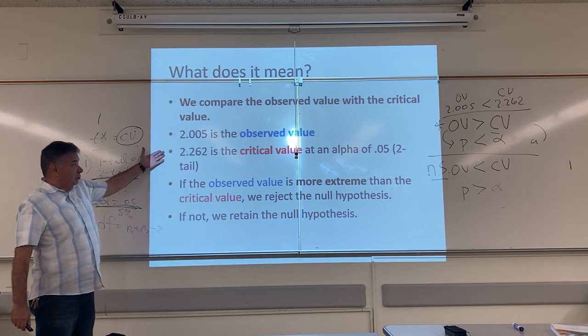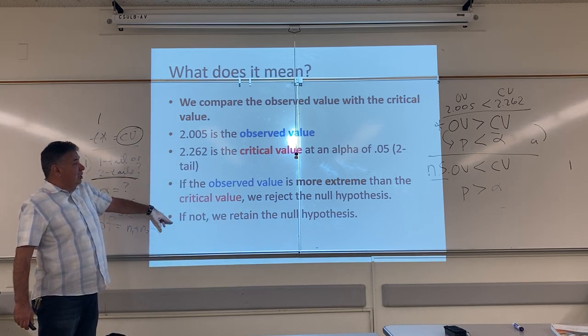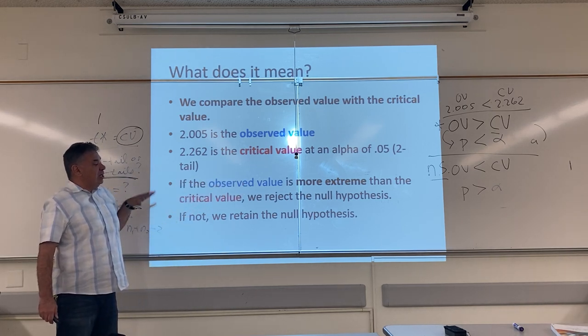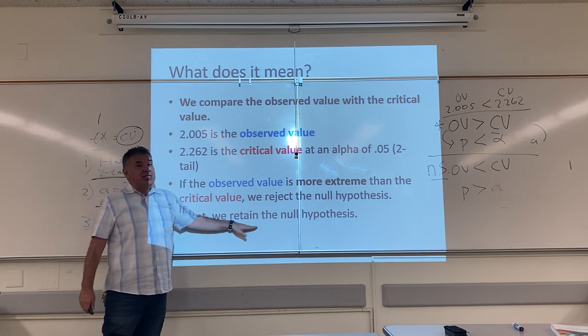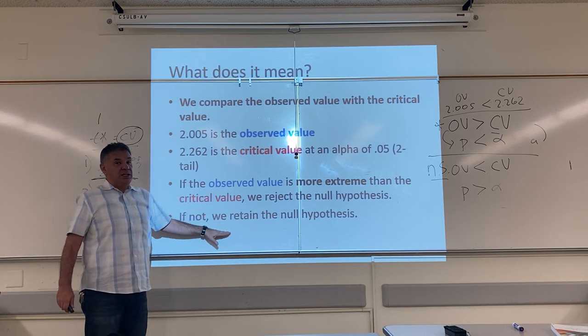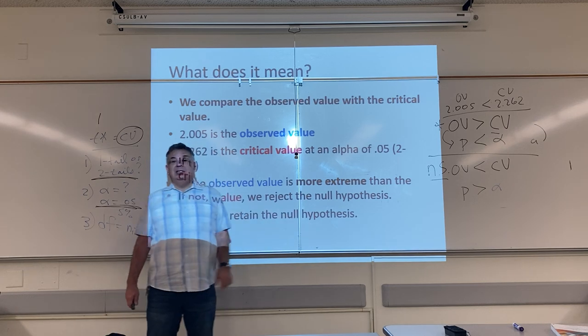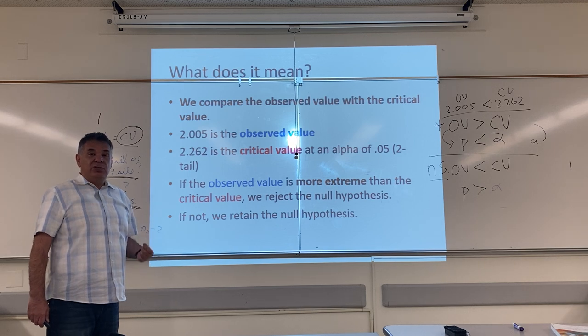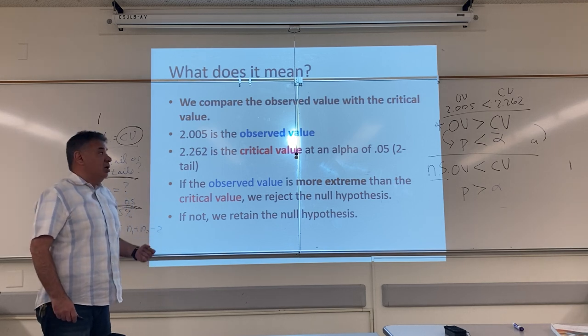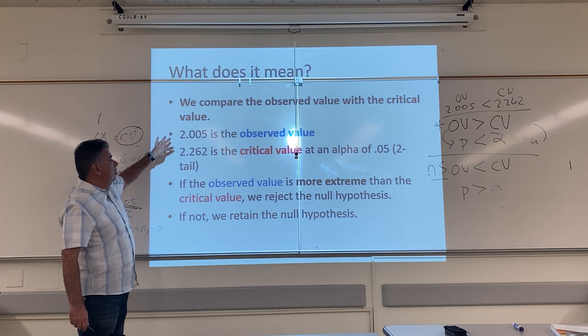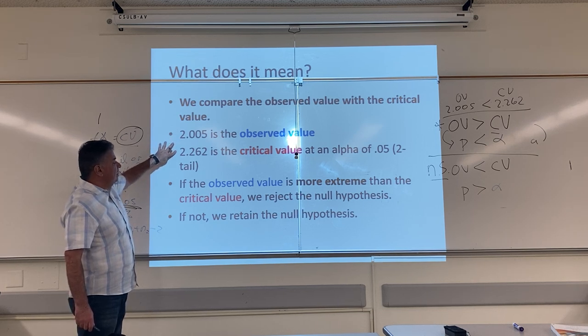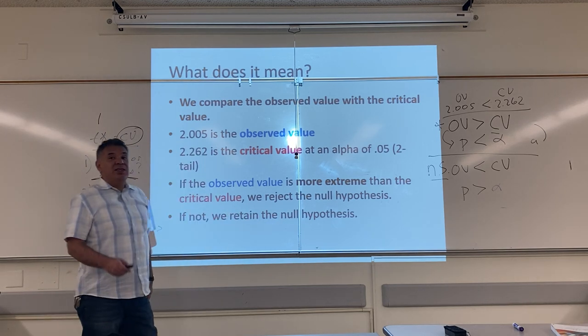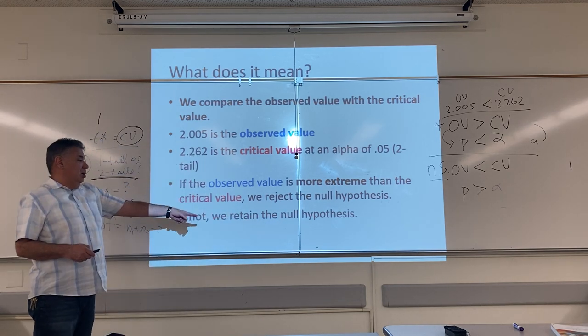However, if that's not the case, if the observed value is not more extreme than the critical value, what are we going to do? We're going to retain. We're going to keep believing the null hypothesis. What's the null hypothesis? It's the statement that says there is no difference between the groups. So, what did we find? We found that the OV was not more extreme than the CV. So, what are we going to do? What's our decision? We're going to retain the null hypotheses. We're going to keep it.